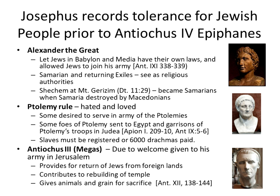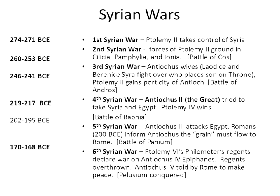Ptolemy made sure that slaves had to be registered and taxes paid; if you didn't register your slaves, you had to pay 600 drachmas. Antiochus Magnus — a much later Antiochus king — was given a welcome by his army in Jerusalem. He provides for the return of Jews from foreign countries, contributes to the rebuilding of the temple, and gives animals and grain for sacrifice. This is similar to what Ezra did under the Persians, showing respect for the gods.